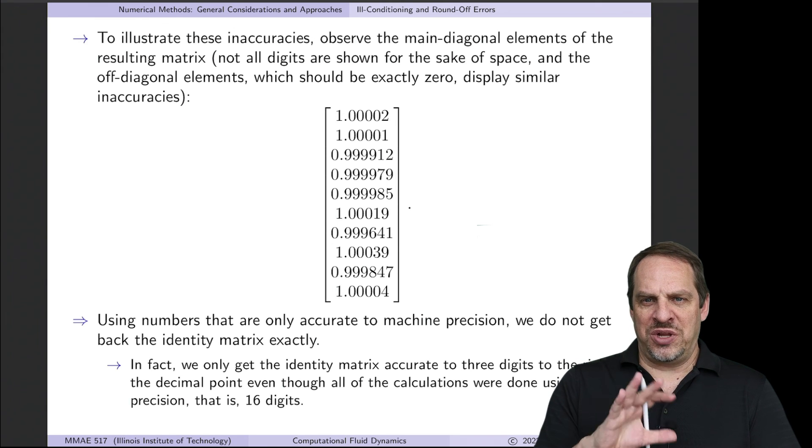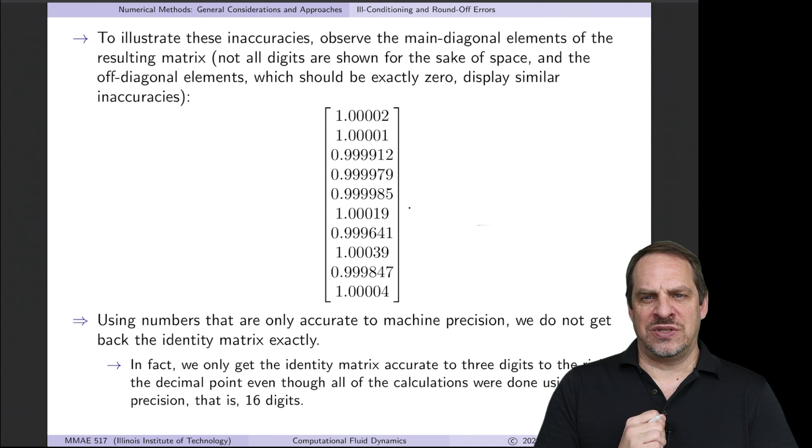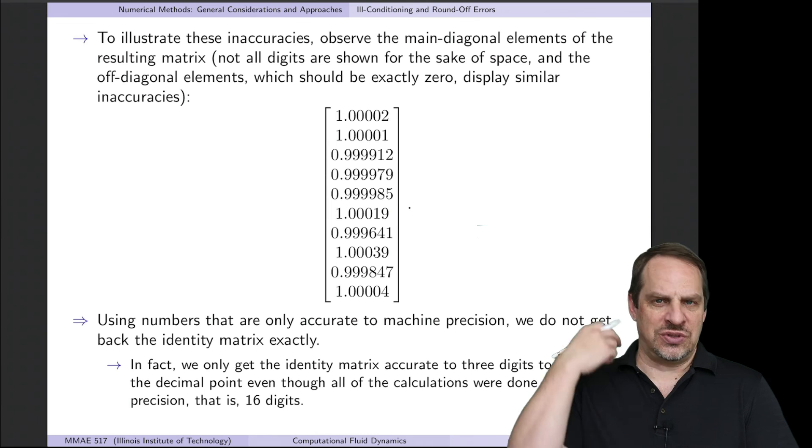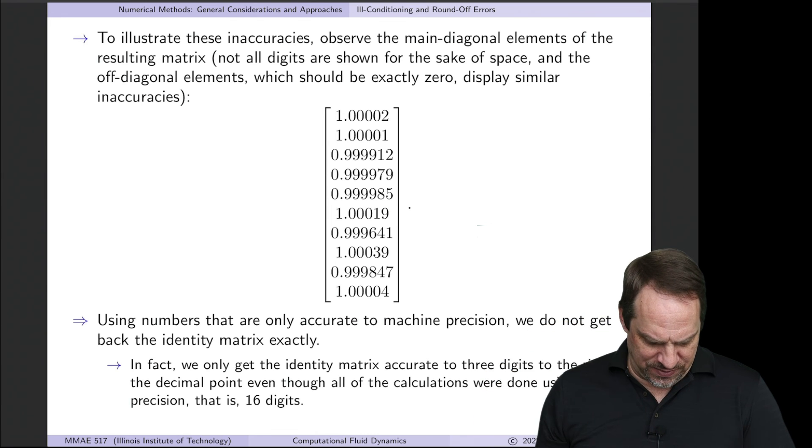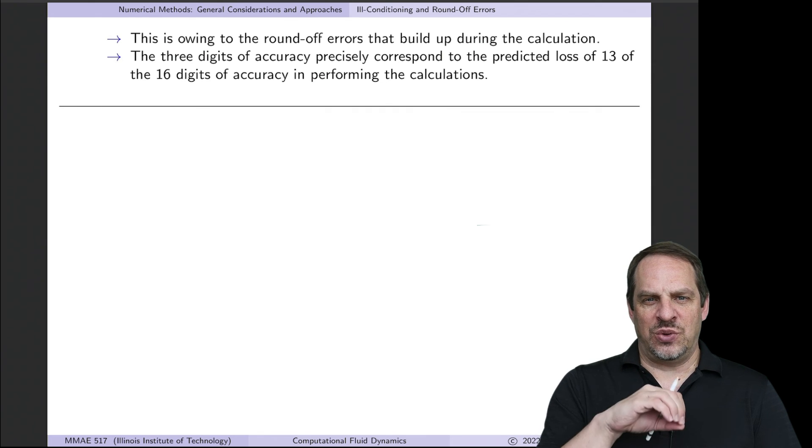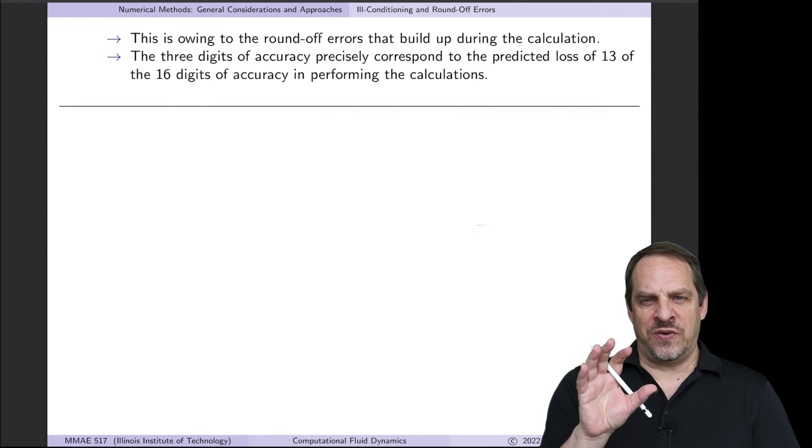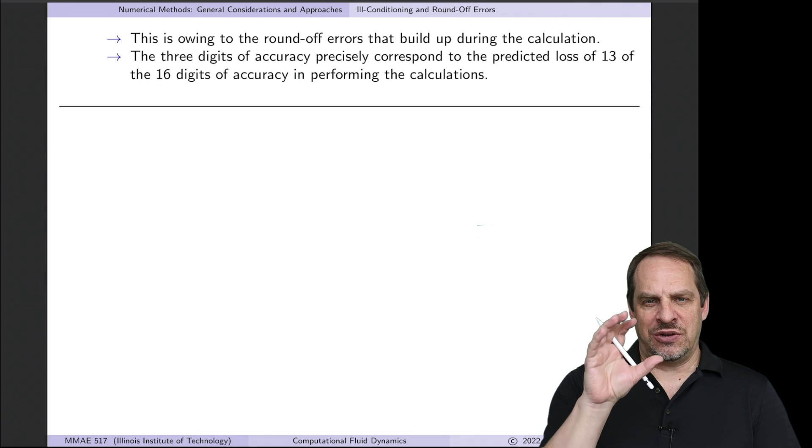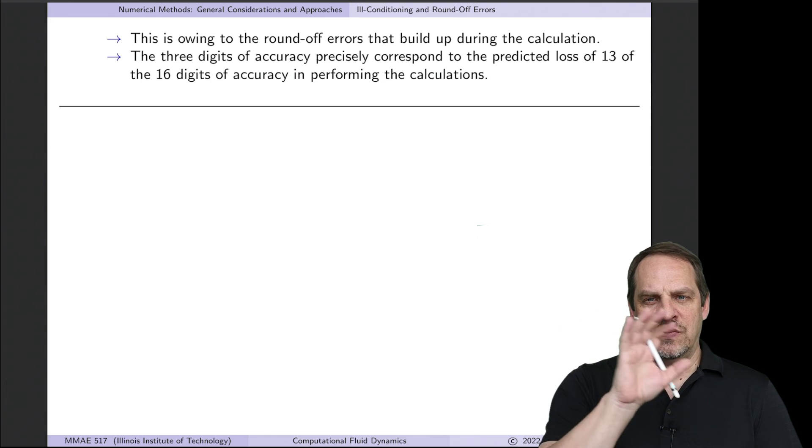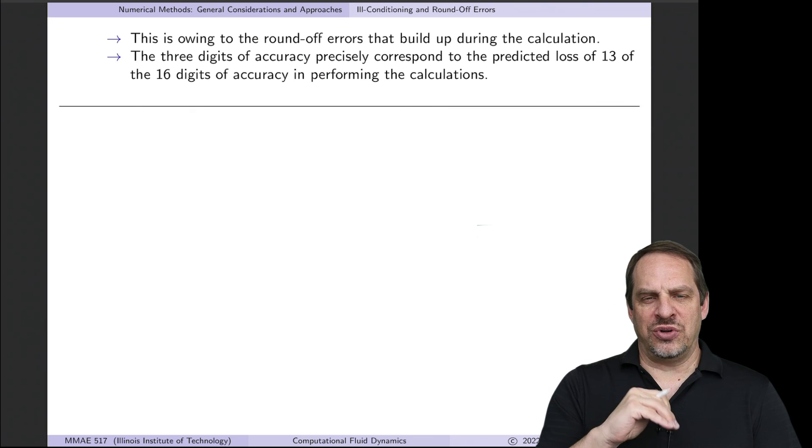So again, I'd encourage you to play with this. Take a look at what happens when you try different size Hilbert matrices, try different operations such as inverses, getting solutions of A U equals B, and things like that. So finally, just to summarize, the reason for the inaccuracies that we get in taking this inverse is because of the round-off errors in the calculations that are required to get the inverse of a matrix and then do the matrix multiplication. So it's those round-off errors that are building up that are producing these errors.